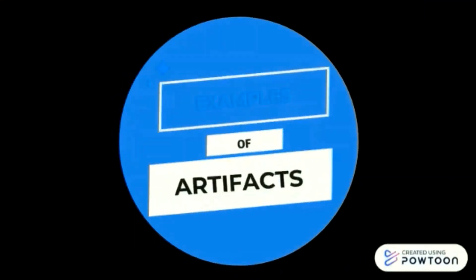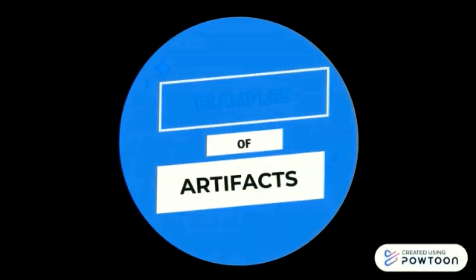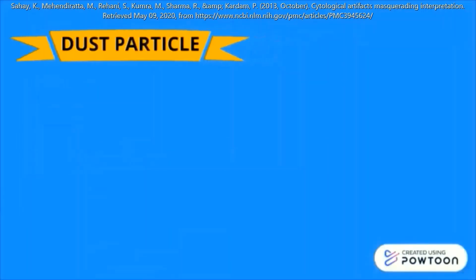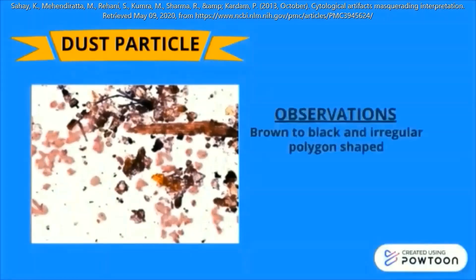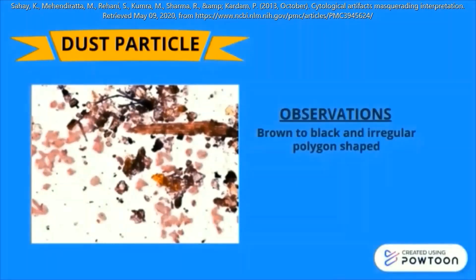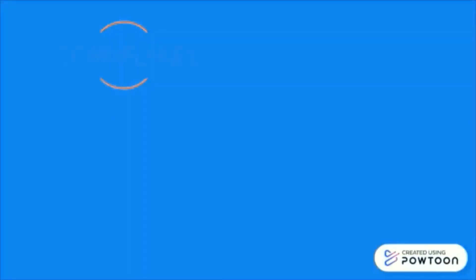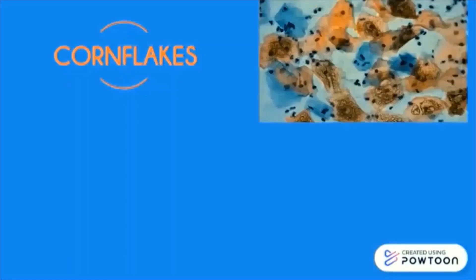Now let us take a look at a few common artifacts. The first artifact is dust particle. Dust particles are brown to black in color and have an irregular polygon shape. The second artifact is comb flakes.